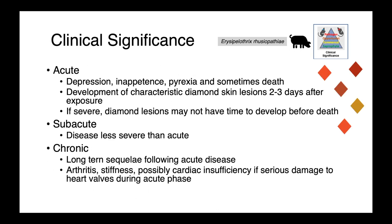In acute disease, we see depression, inappetence, pyrexia, and sometimes just sudden death — you may only find dead animals. The development of these very characteristic diamond skin lesions occurs two to three days after exposure. But in very severe cases, those diamond lesions may not actually have time to develop before death, so not finding these doesn't mean that a herd is not infected with Erysipelothrix.